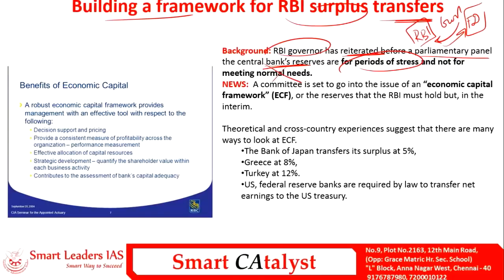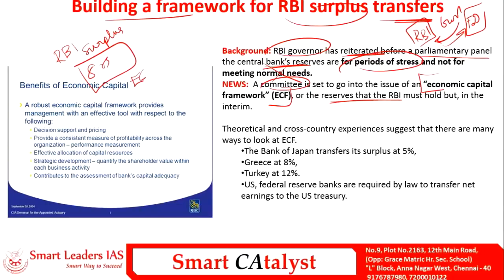For that purpose, a committee was established to look into the issue of the economic capital framework (ECF) of RBI — how much reserves RBI must hold. For example, if RBI has a surplus of eight rupees and the ECF is fixed at three or four rupees, then the remaining five rupees is surplus to the RBI and should be transferred to the government to tackle its financial conditions.